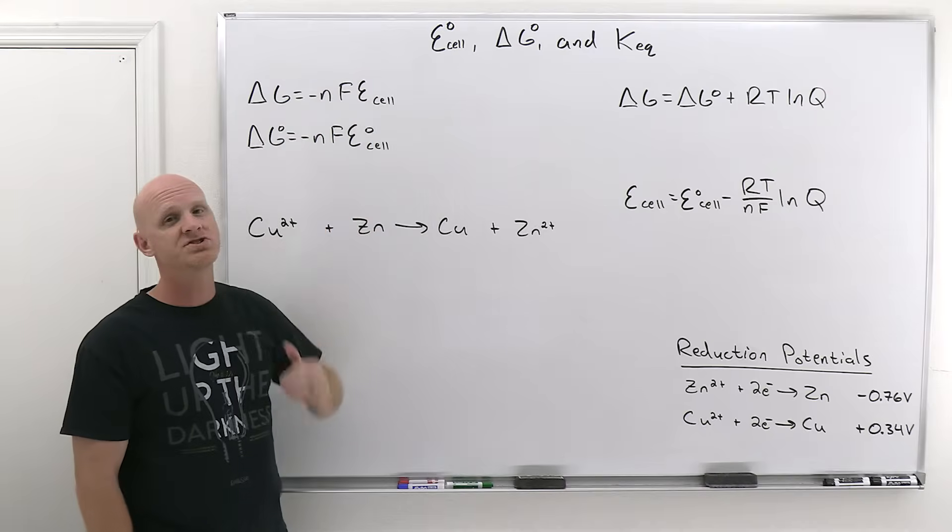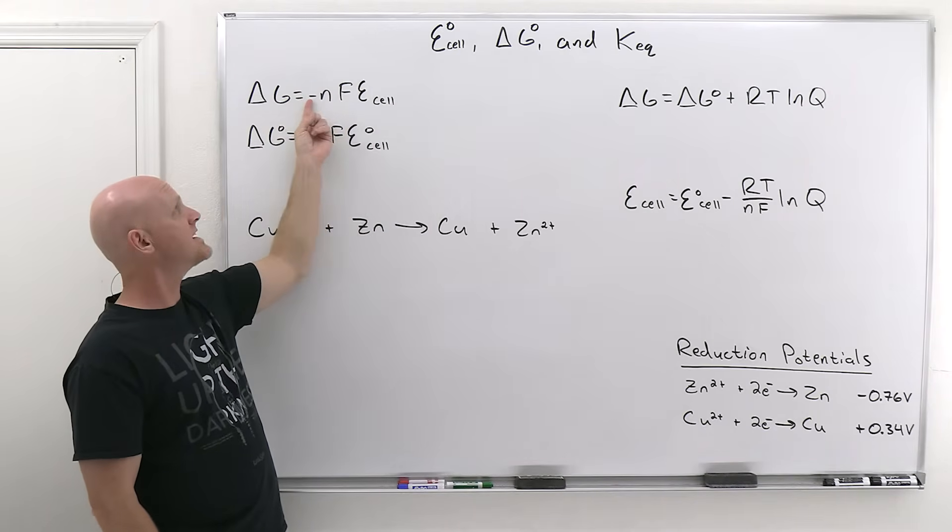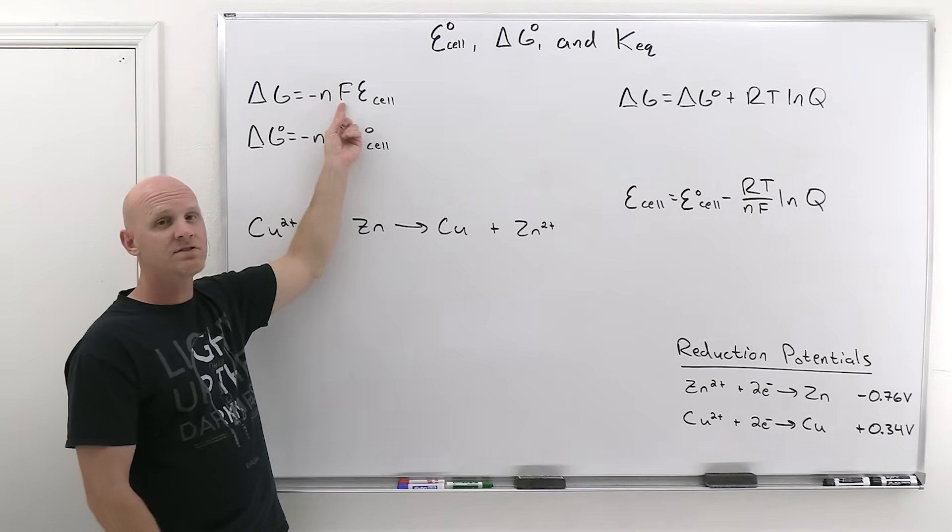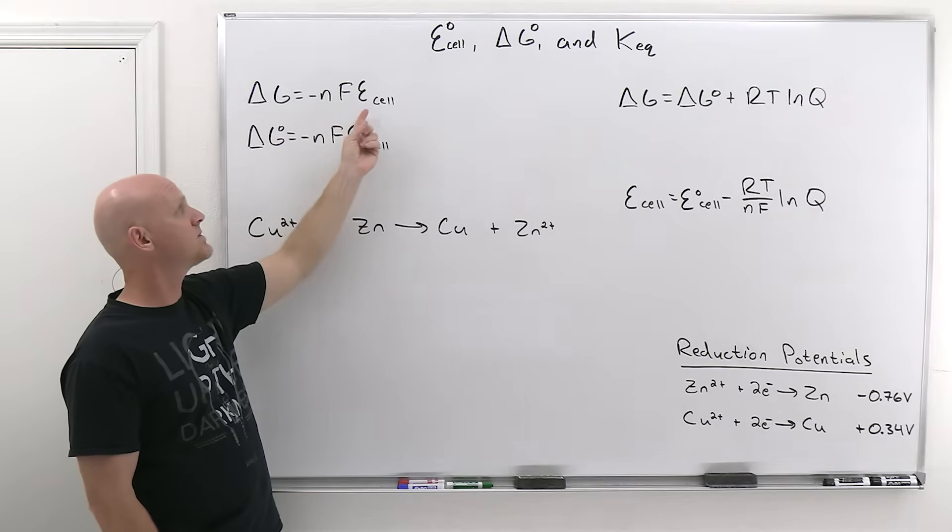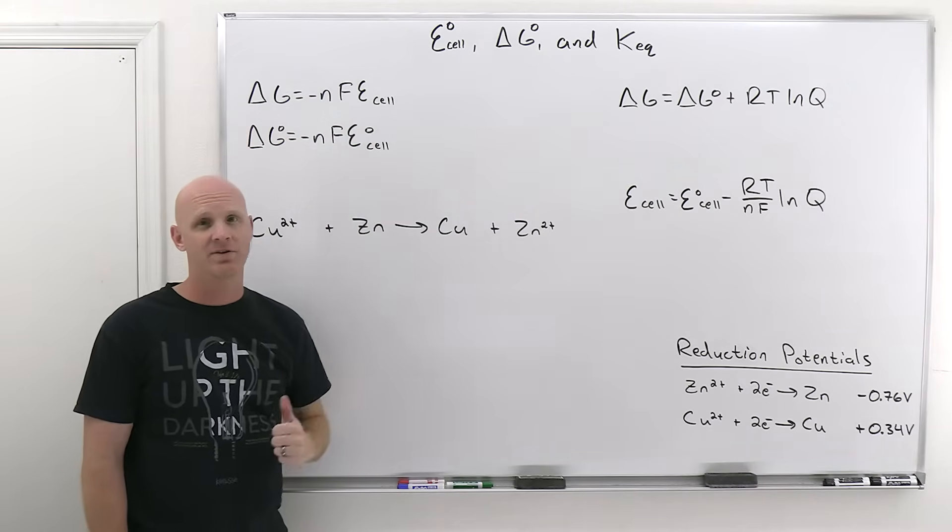And here's the mathematical relationship that shows you that if E cell is positive, that because of that negative sign, delta G is going to come out negative. F here is a positive constant, N is a positive number of moles of electrons, and so if E cell is positive, because of that negative sign, delta G has to come out negative.